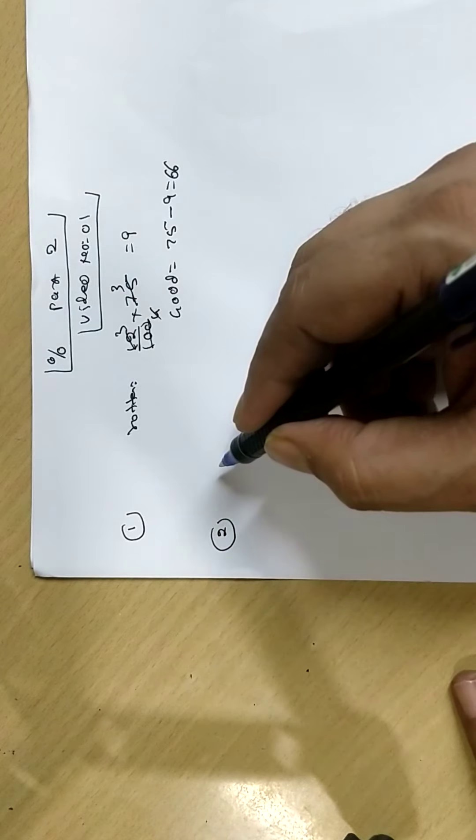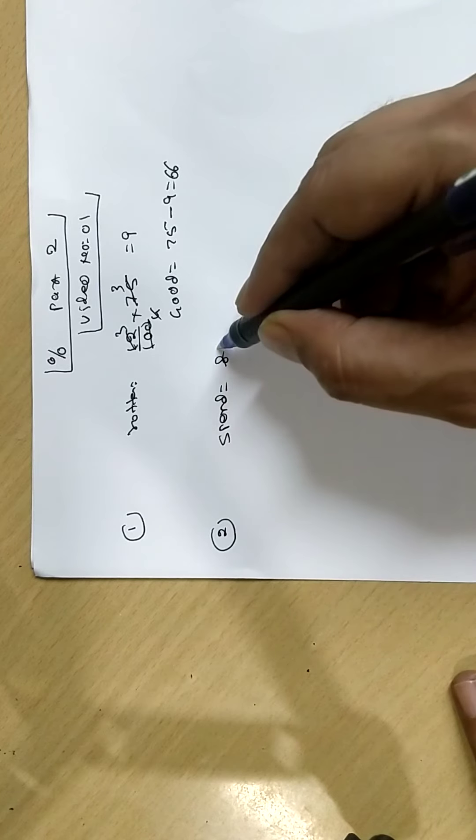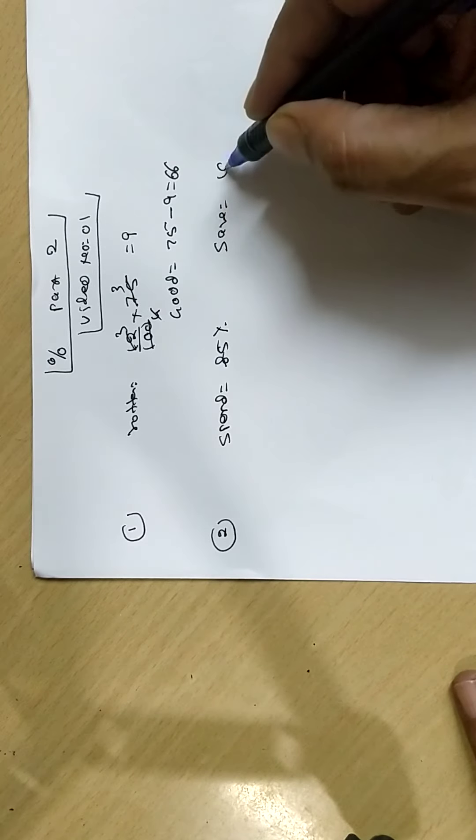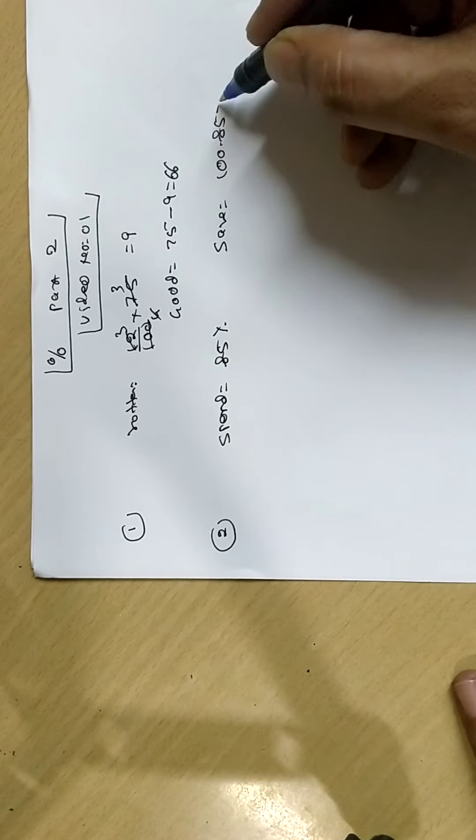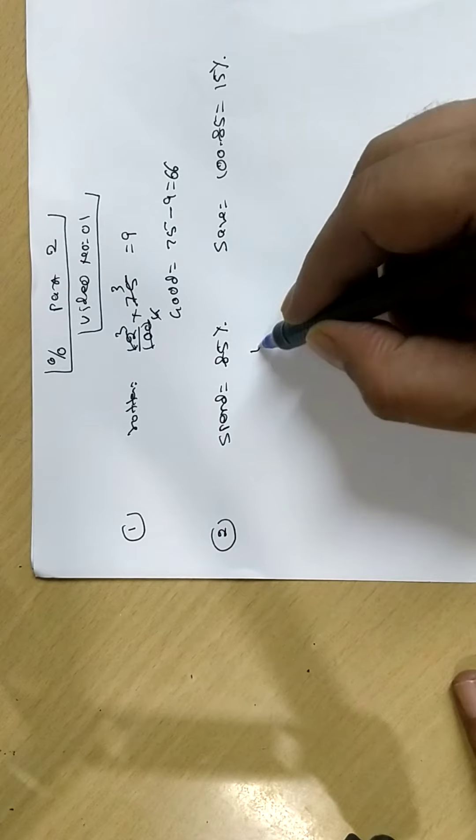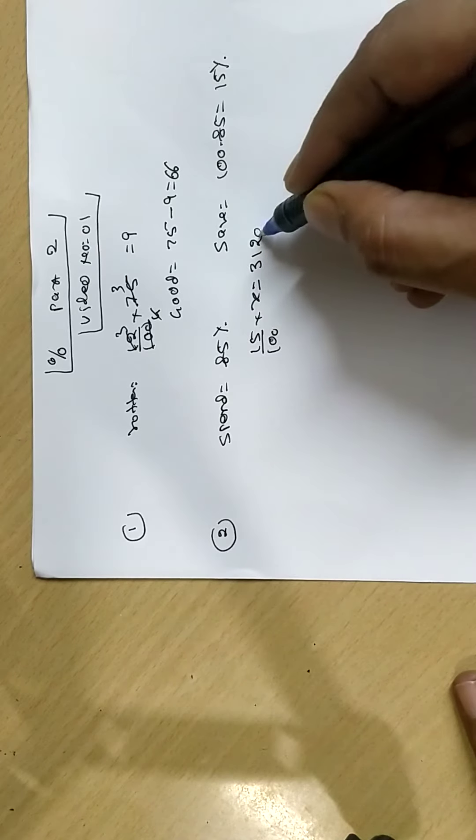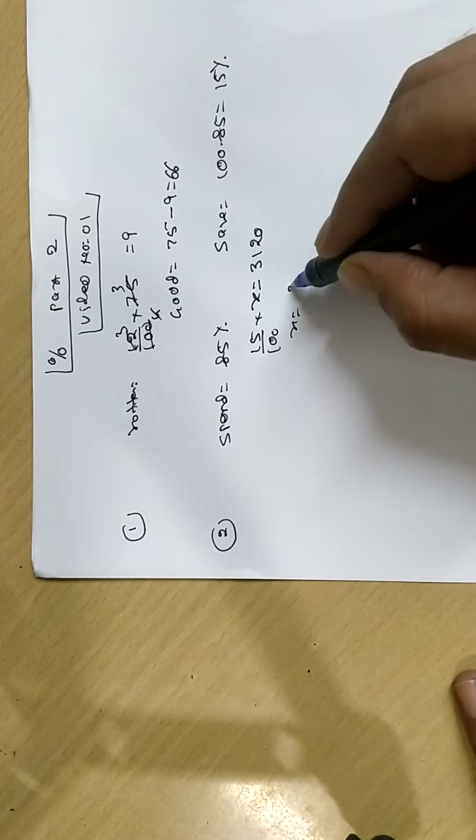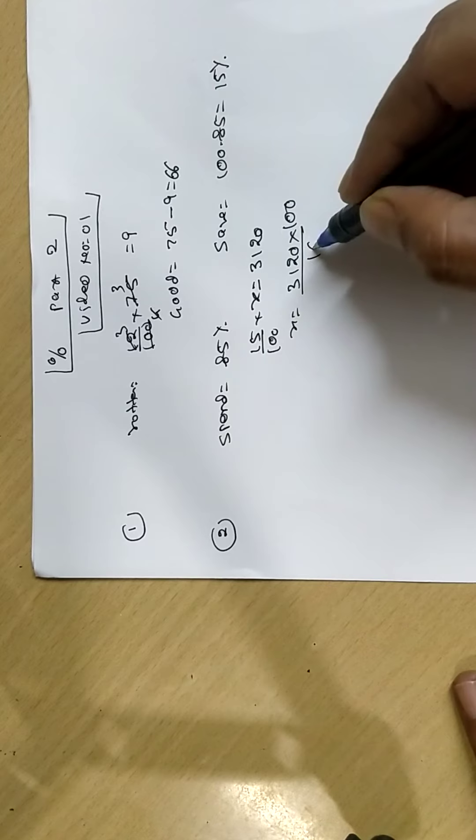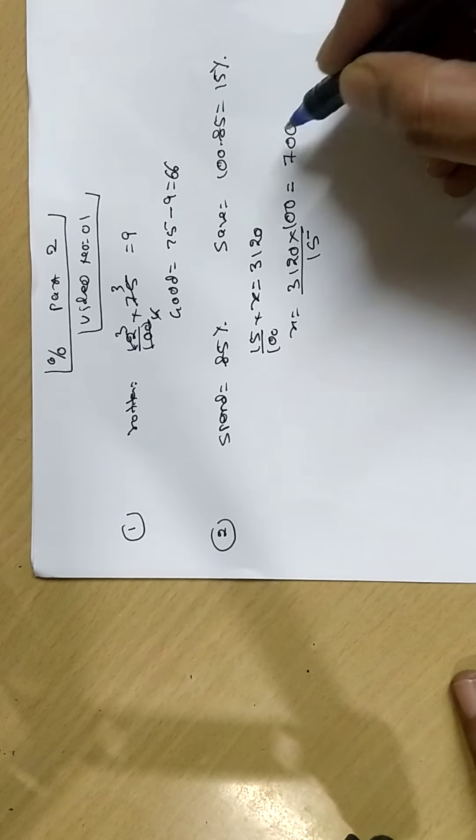Rahul spent 85% of his salary. Spent 85%, saved 100 minus 85, that is 15%. And 15% of salary is 3,120. X equals 3,120 times 100 upon 15, equals 700.